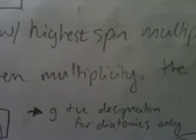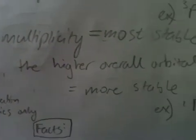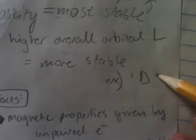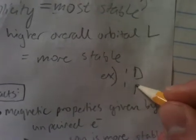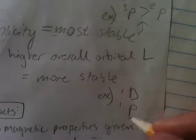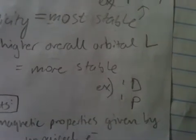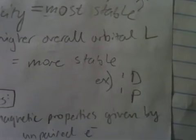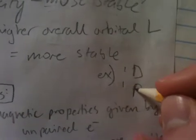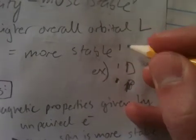Second rule. For a given multiplicity, the higher overall orbital angular momentum is more stable. So, let's say you have the same S. You have a singlet D, and then you have, let's say, a singlet P. Excuse me, yeah, a singlet P. Where P is, well, you know what, let's do a singlet S and a singlet D. The same thing, I just want to do S.